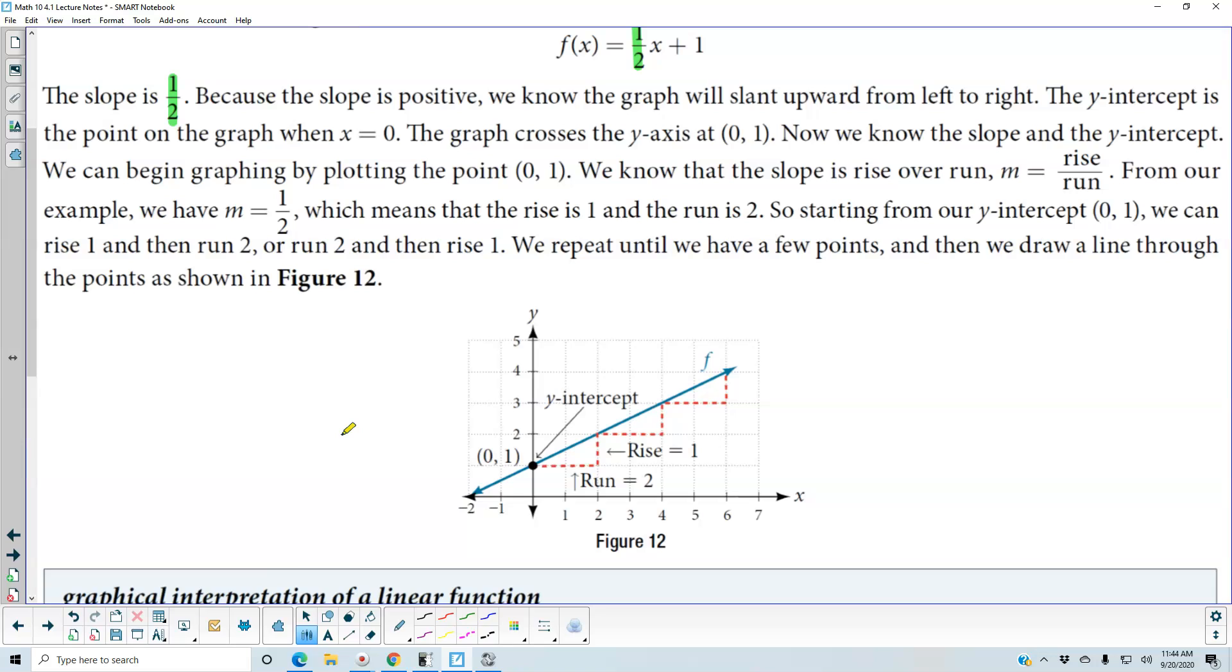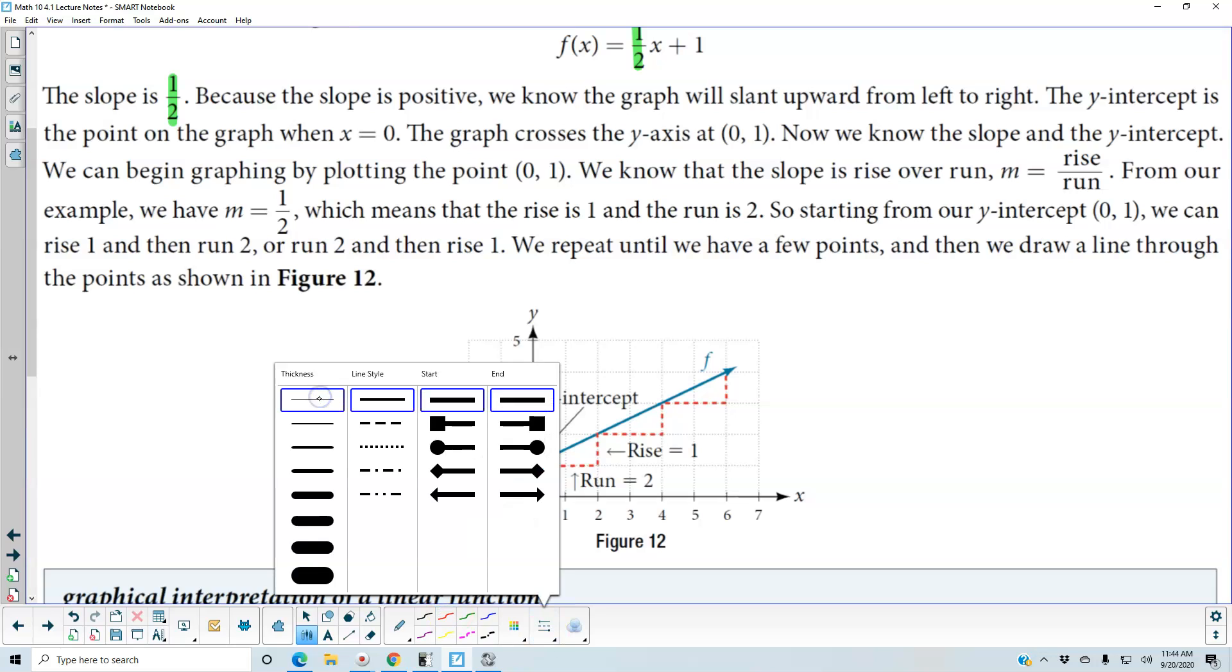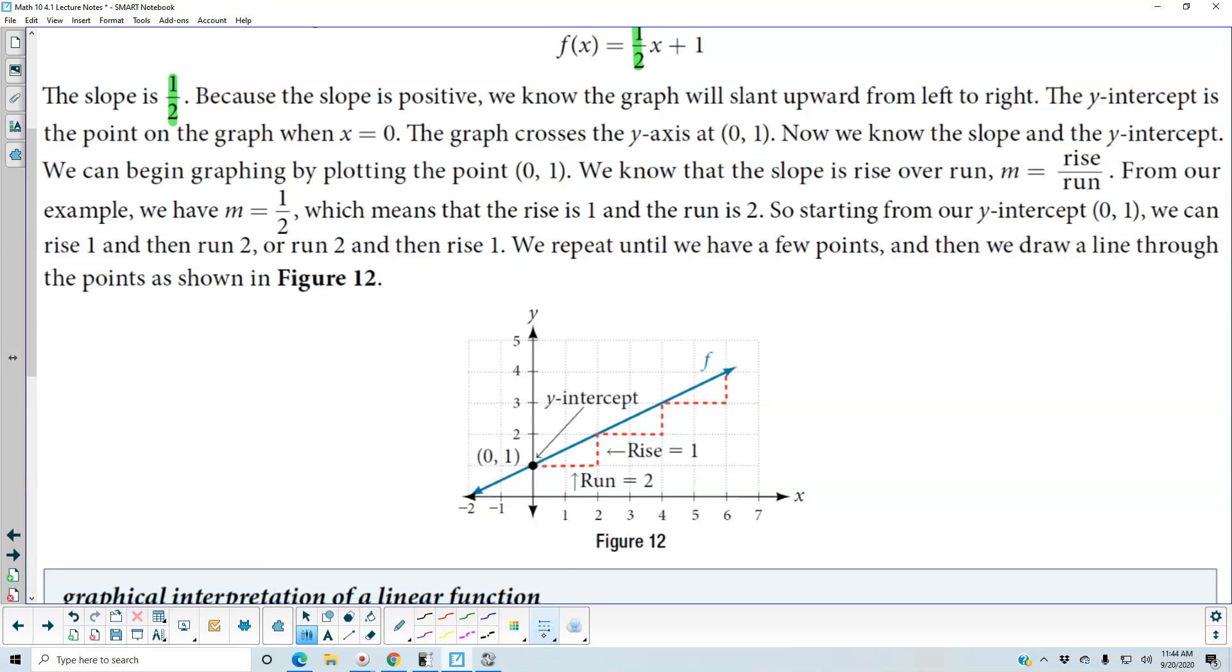Using our slope, here's our y-intercept at zero one. If we go up one and then to the right two, there's our next ordered pair. Again, if we go up one and then to the right two, there's our ordered pair. If we go up one and then to the right two, there's your ordered pair.